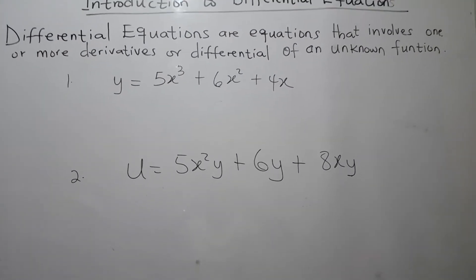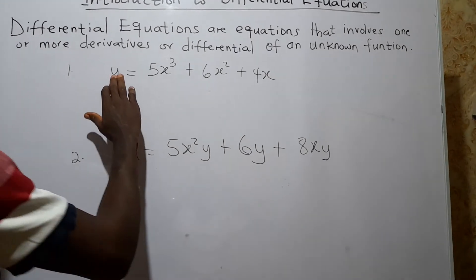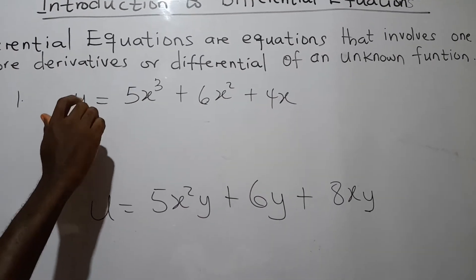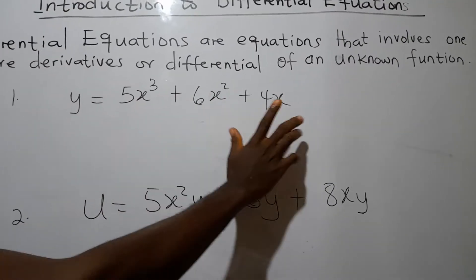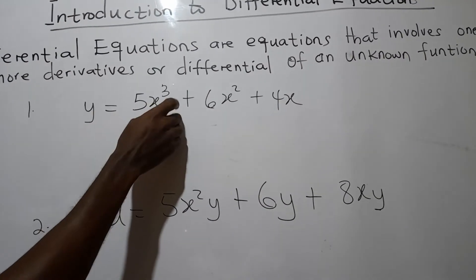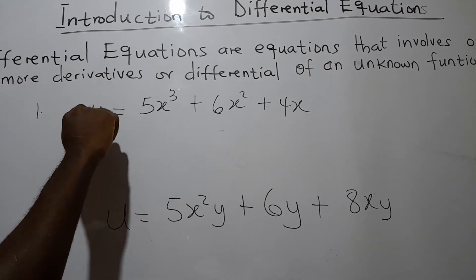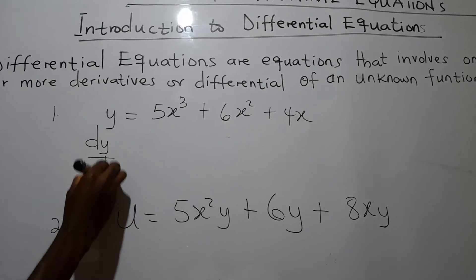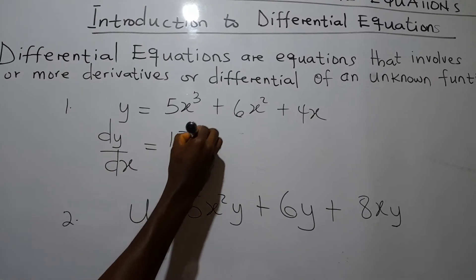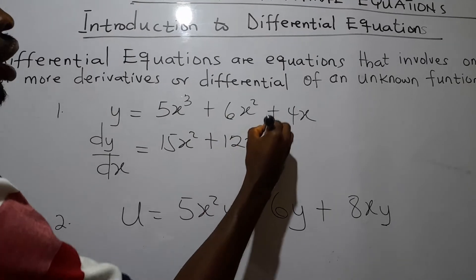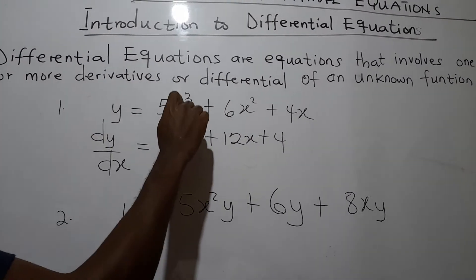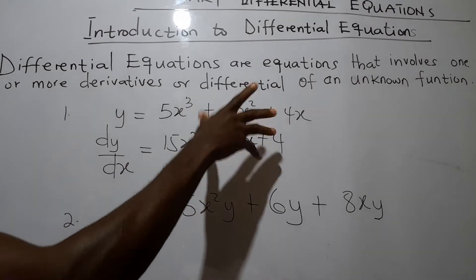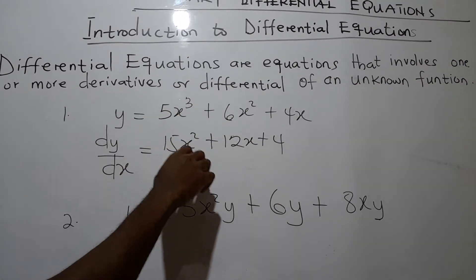Before we come to the classification, I want to introduce you to something. We have y = 5s³ + 6s² + 4s. The dependent variable here is y and the independent variable is x. y depends on x, so we say y is the dependent variable and x is the independent variable. We find dy/dx, which equals 15s² + 12s + 4.